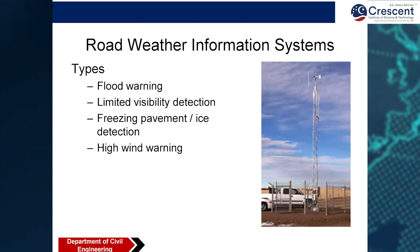The Road Weather Information System is used in many European and American countries that have very long highways. When moving from one point to another or from one state to another, the weather can change immediately without warning. The system detects weather changes and provides information such as flood warnings, limited visibility, freezing pavement, and high wind warnings to drivers.